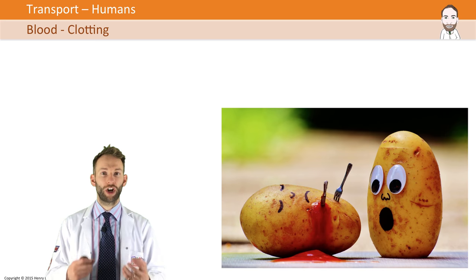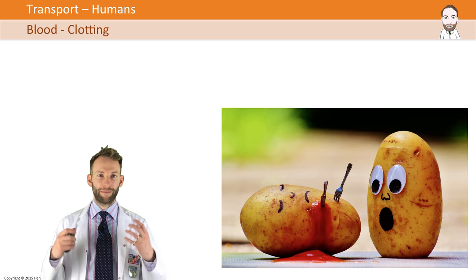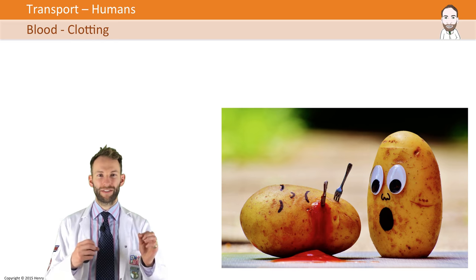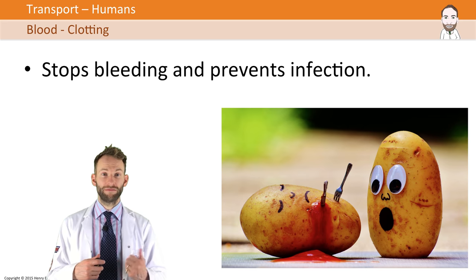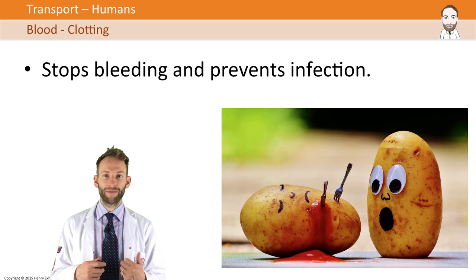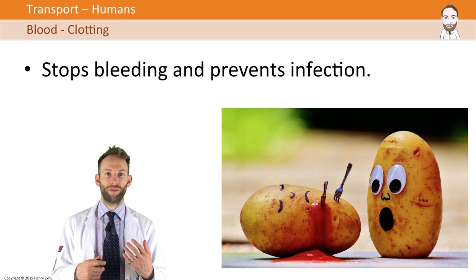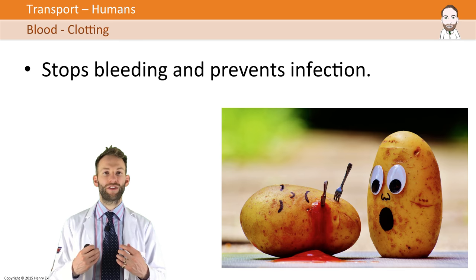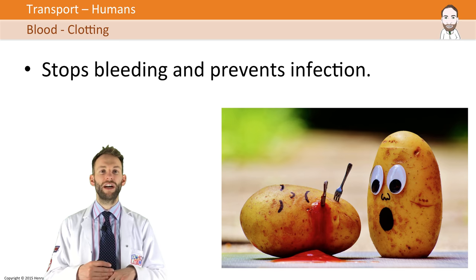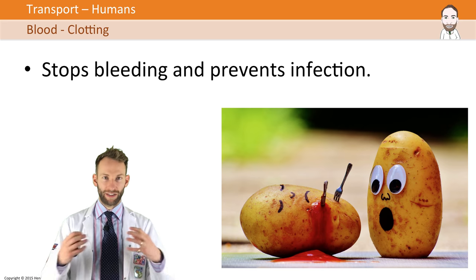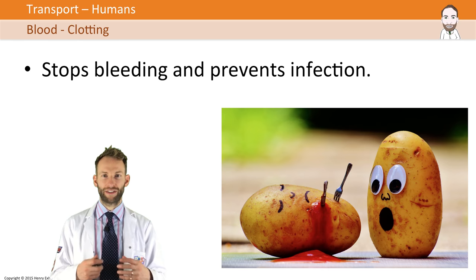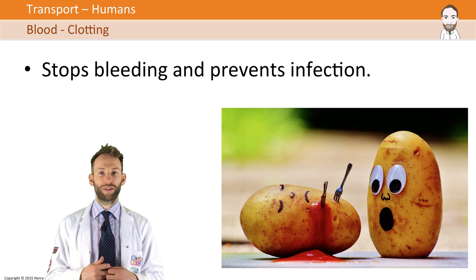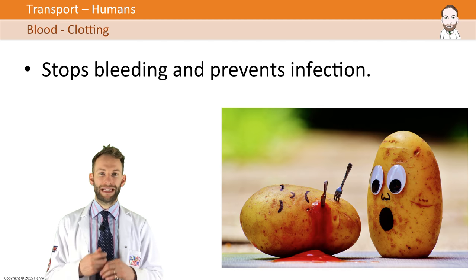Another important function of the blood is how it clots — this is very important. The part of the blood that does this are the platelets, those little fragments we saw earlier. They will form blood clots, which is good for two reasons: it stops bleeding, and it also prevents infection of the wound. Normally your skin protects you from pathogens, but if you have a cut, pathogens can get straight into your blood. A clot or scab over the top can protect you against those infections. Platelets produce a chemical which causes a plasma protein called fibrinogen to change into fibrin, which makes fibres to form the actual clot.